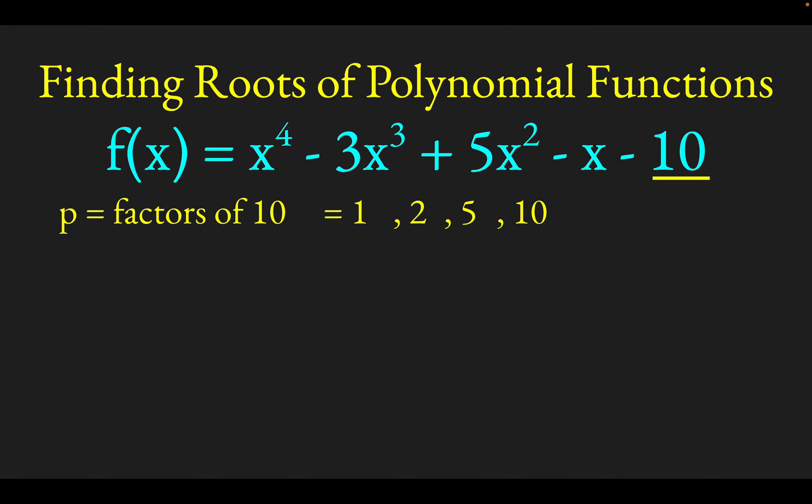And then you look at the leading term and get the factors of the leading coefficient. Those are traditionally called Q. The leading coefficient here is 1 because the leading term is 1x to the fourth, so its only factor is 1. Now, the reason you do this is possible real roots include plus or minus P over Q. So possible real roots include plus or minus 1, 2, 5, and 10. That's the family of possible real roots we can draw from.